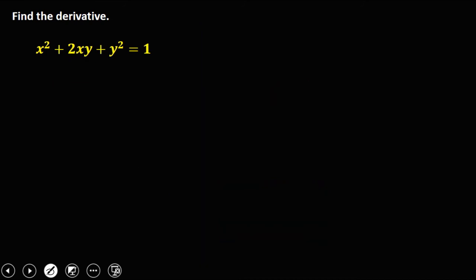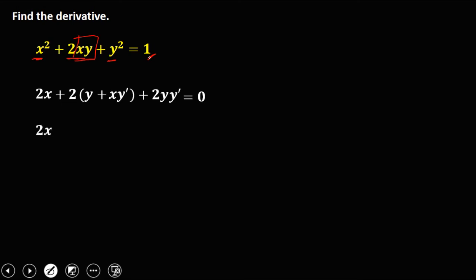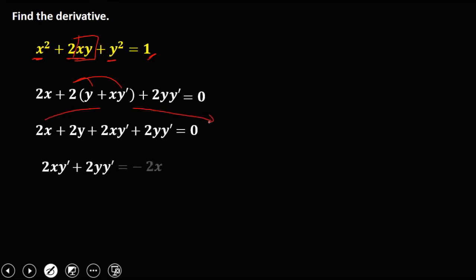For the next example, differentiate every term. The derivative of x² is 2x. For 2xy, we apply the product rule: 2 times the derivative of xy gives 2 times (y + x·y prime). The derivative of y² is 2y·y prime, and the derivative of the constant is 0. Distributing the 2 gives 2y + 2x·y prime. Then 2x + 2y + 2x·y prime + 2y·y prime = 0. Transposing terms without y prime to the right: 2x becomes negative 2x and 2y becomes negative 2y.